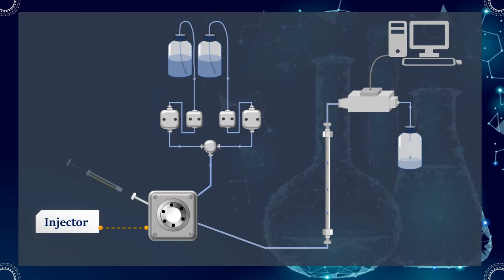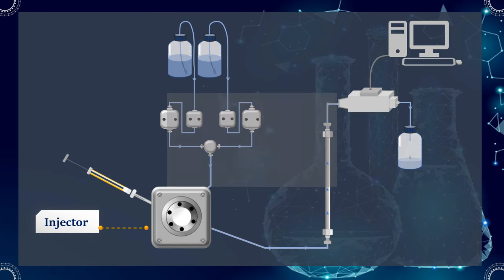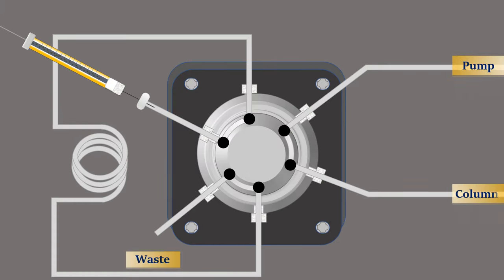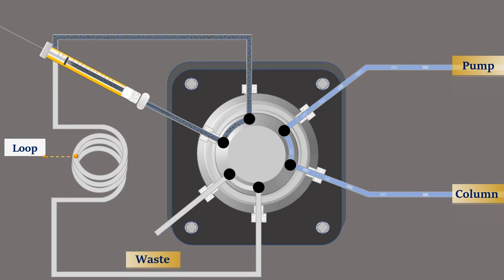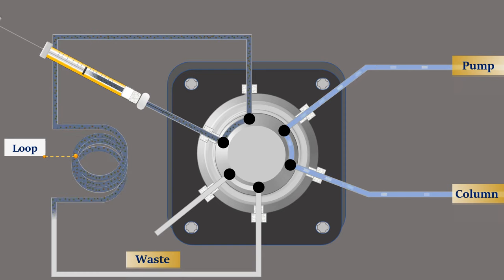Sample introduction can be accomplished in various ways. The simplest method is to use an injection valve. In the load position, the high-pressure eluting solvent flows to the column directly. The loop is loaded at atmospheric pressure from a syringe via the needle port. Excess sample exits the loop via the vent port.